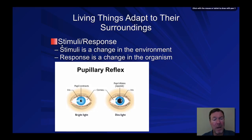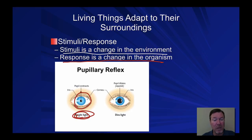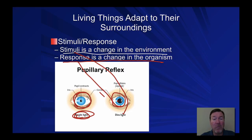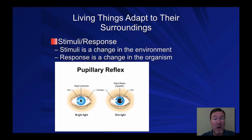Number four: all living things respond to stimuli. A stimulus is a change in the environment. For example, bright light causes your pupils to constrict — the stimulus is the bright light and the response is the change in the organism. Likewise, dim light causes the pupils to dilate. Another example: if you touch a hot pan, your nervous system immediately pulls your hand away — that's a response to stimuli.